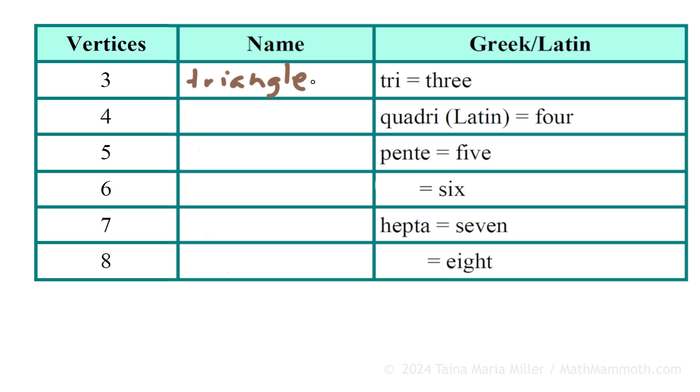And then if it has four vertices, for example, four corners, one, two, three, four. What is it called? These are called quadrilaterals, remember? And this one comes from Latin words, not Greek. Quadri meaning four, and then lateral comes from the word meaning side.